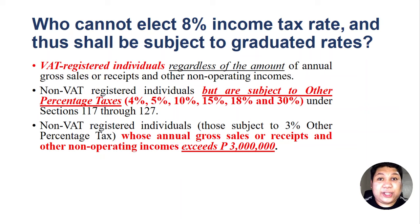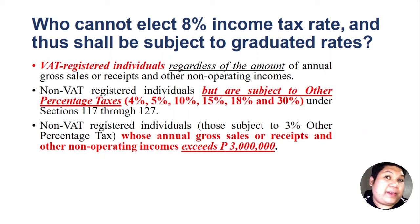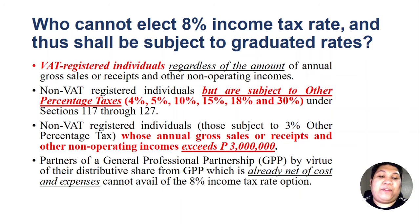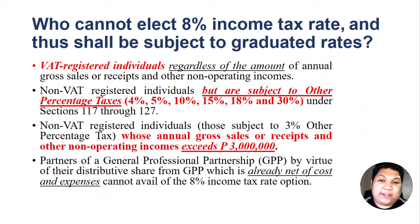Nightclubs are also non-qualified because they are subject to 18% percentage tax. Additionally, non-VAT registered individuals subject to 3% but whose annual gross sales or gross receipts already exceeded ₱3 million are not qualified — even if non-VAT registered, once annual gross sales exceed the ₱3 million VAT threshold, they will be required to register under the VAT system. For example, if in 2020 a non-VAT taxpayer's annual gross sales reach ₱4 million, the next year they will be required to register under the VAT system. We also have partners of general professional partnerships whose distributive share from GPP is already net of cost and expenses — they cannot avail the 8%. Those are the four taxpayers who cannot elect the 8% optional rate.